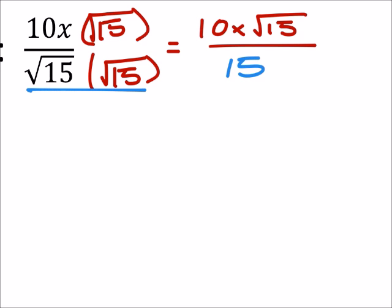But in the numerator I have a 10, in the denominator of 15, both of these can be simplified by a factor of 5. So this ends up being 10 divided by 5 is 2, 15 divided by 5 is 3.